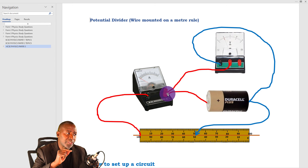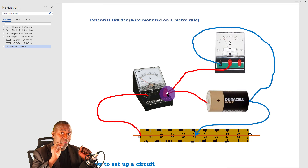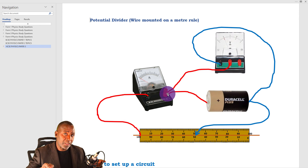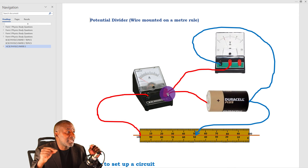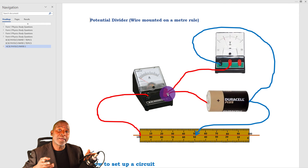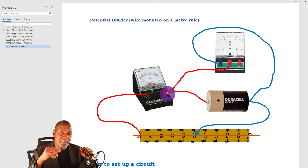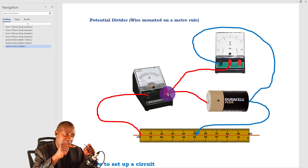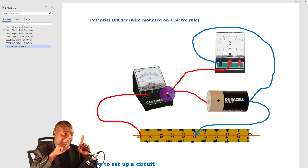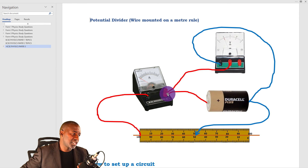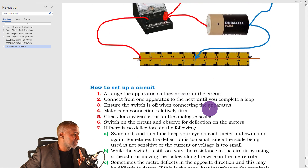Also observe that the voltmeter is connected across the component — across the source of EMF — while the ammeter is connected in series with the resistor or in series with the battery or cell. Let's look at the points for how to set up a circuit: arrange the apparatus as they appear in the circuit — I've already mentioned that. Connect from one apparatus to the next until you complete a loop. Ensure the switch is off when connecting the apparatus — you don't want to run down the battery while doing your connections.